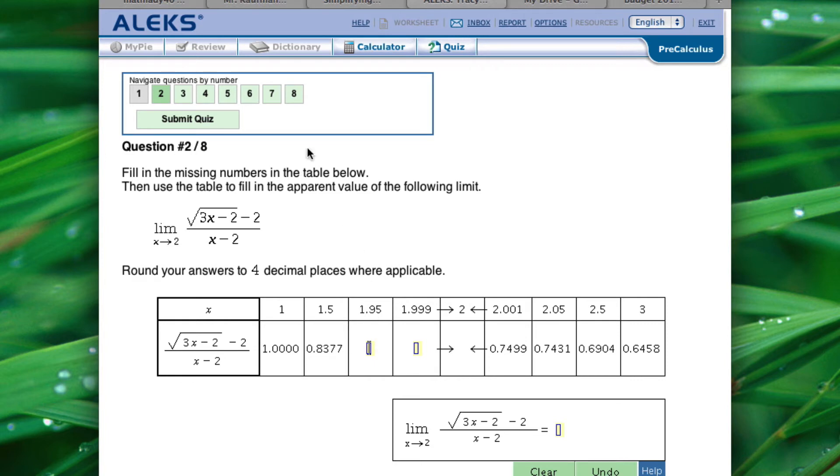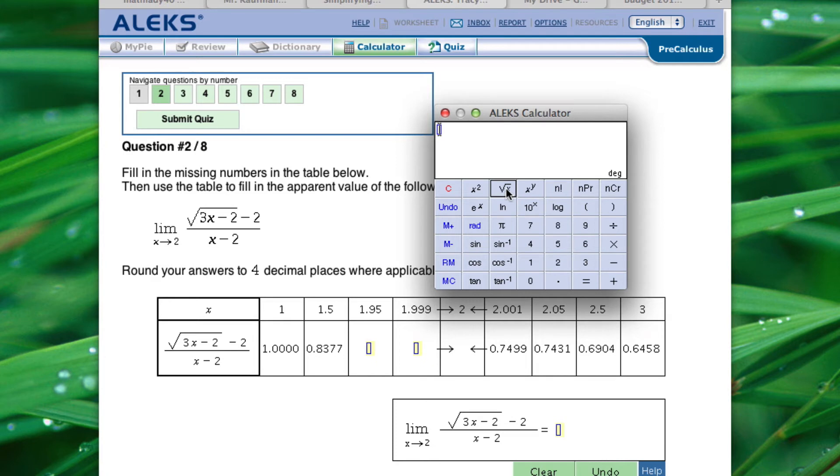So let's plug in 1.95. So we're going to have the square root of 3 times 1.95 minus 2. We're going to click on the outside of the square root and say minus 2 again. And then highlight the whole thing and say divide by, and that will be 1.95 minus 2. We're going to round this to the nearest fourth decimal. So 0.7572.